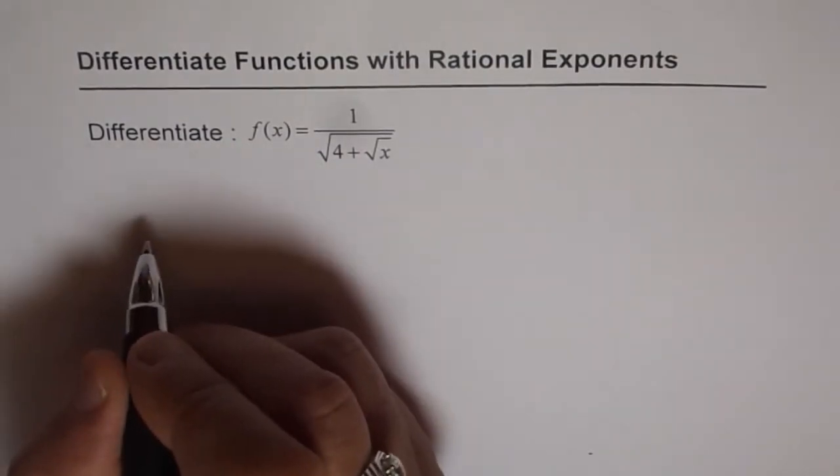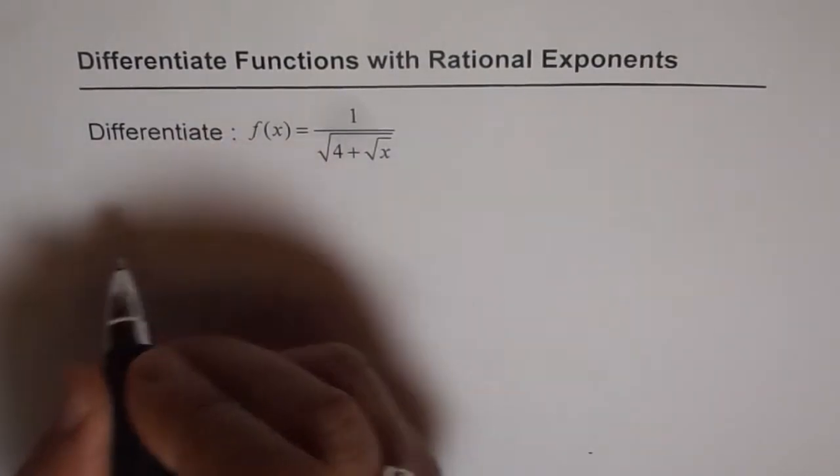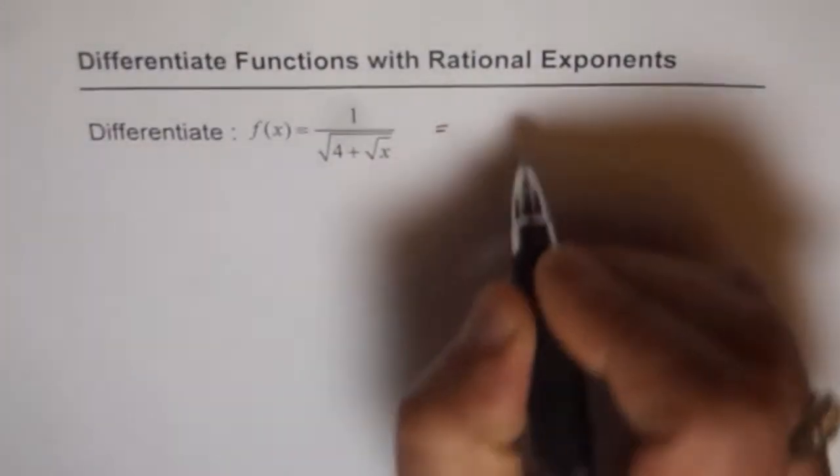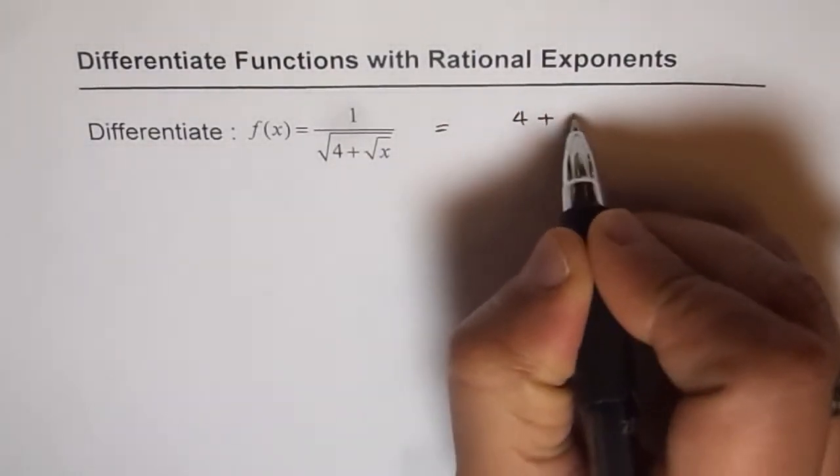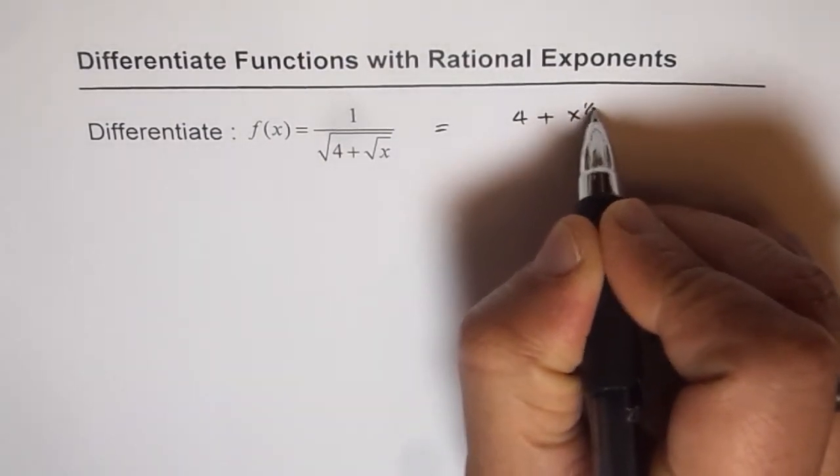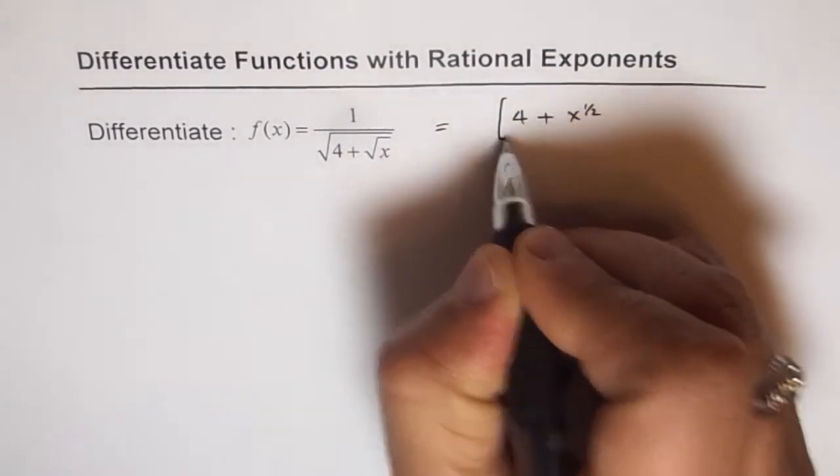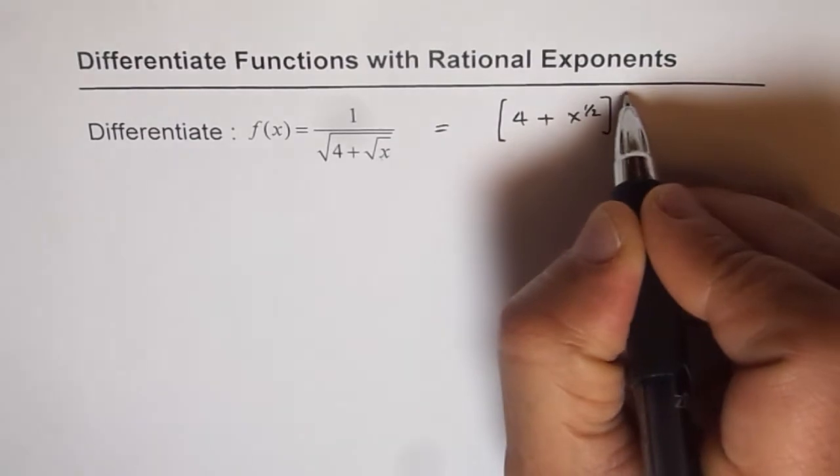So let me rewrite this and then find the derivative. We can write this as equals to 4 plus x to the power of half. This is square root x. And everything to the power of minus half.